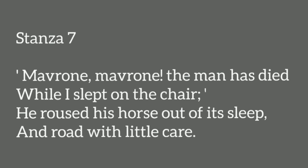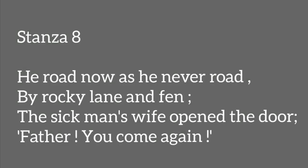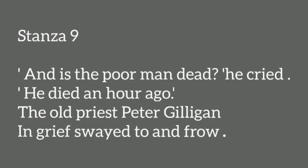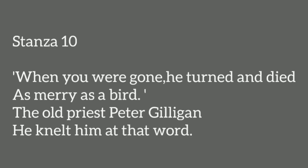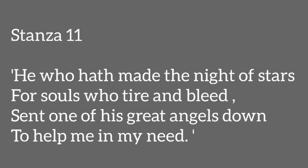Let us discuss some poetic devices used in this poem by W.B. Yeats. The first one is structure. This poem contains twelve stanzas, and each stanza contains four lines. The total number of lines in this poem is 48. The second poetic device is rhyme. There is a regular rhyme throughout the poem. Each stanza has a rhyme scheme of A, B, C, B.